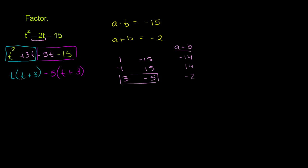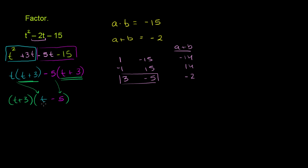Notice you now have two terms, two products, and they both have the common factor of t plus 3. So we can rewrite this right here as a product of t plus 3 — we're undistributing, factoring out the t plus 3 — times t minus 5. If you take t times t plus 3 and factor out the t plus 3, you're just left with t. If you take negative 5 times t plus 3 and factor out the t plus 3, you're just left with negative 5. So you have fully factored this expression.